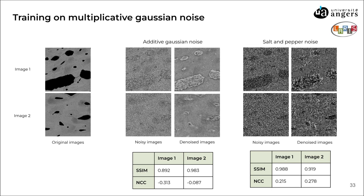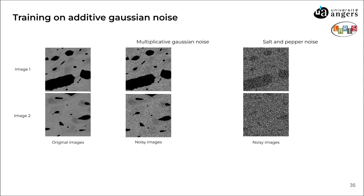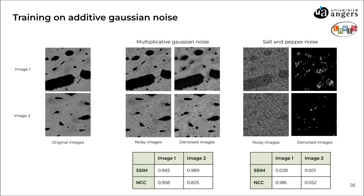We can notice that for the two images and the two noises, the SSIM values are acceptable, but the NCCs are quite low, and they are even inverted for the images with the additive noise. Then we trained the software on images with additive Gaussian noise and applied it to images with multiplicative and salt and pepper noise. For the multiplicative noise, the metrics are good — probably because this noise follows the same distribution as the additive noise used for training. For the salt and pepper noise, the denoising is very poor, as confirmed by the quality metrics. This could be explained by the fact that salt and pepper noise is random, unlike Gaussian noise which follows a precise function, so the model does not know how to denoise a random noise.